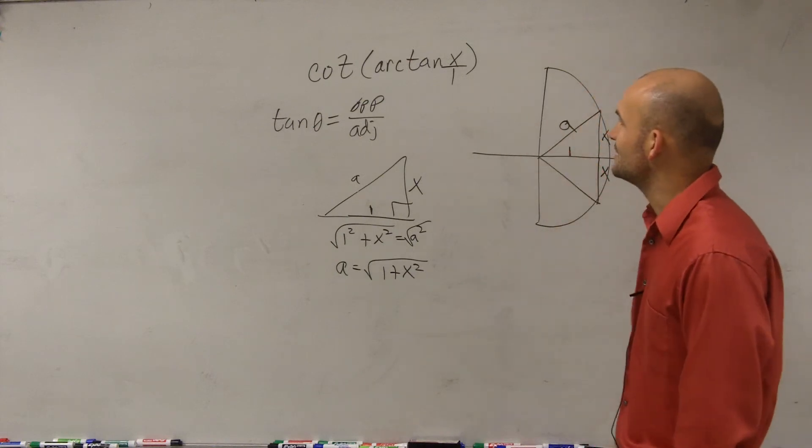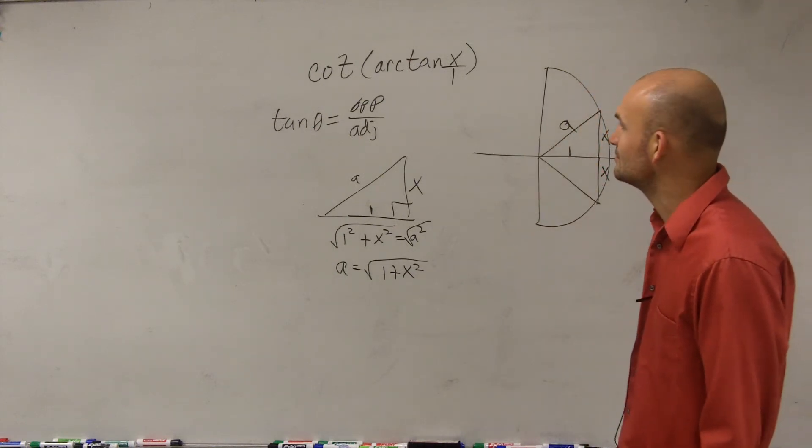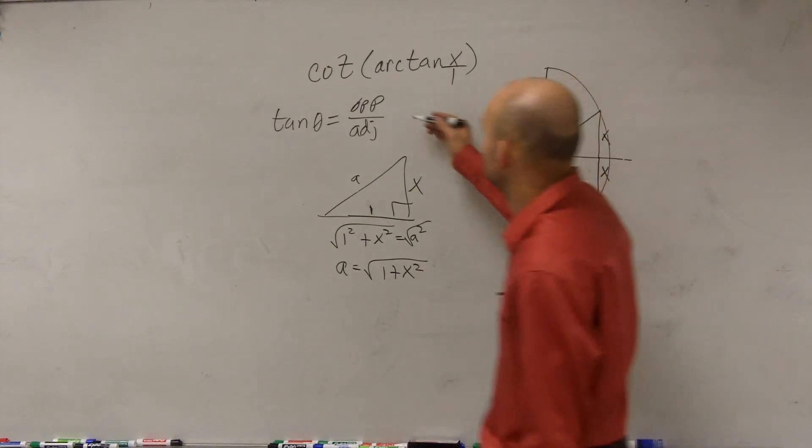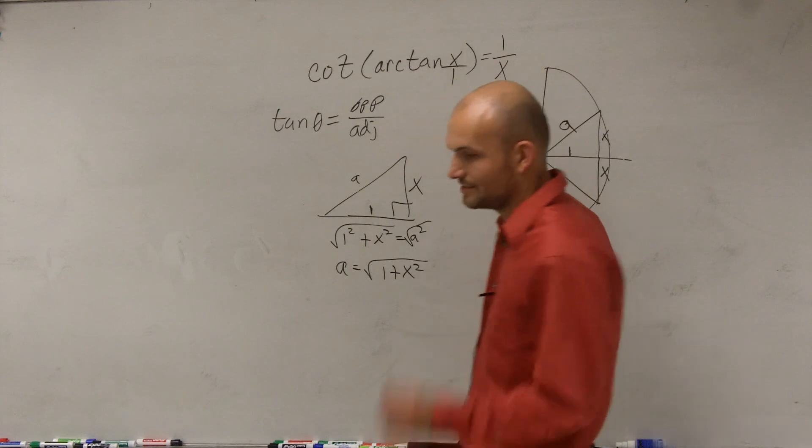Because if you do the arc tangent of tangents, the cotangent is going to be what? The opposite. 1 over x. So the answer is just 1 over x. That was a lot easier than it needed to be.